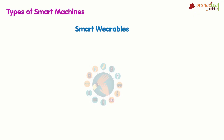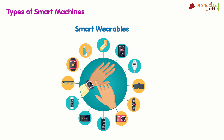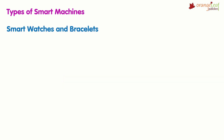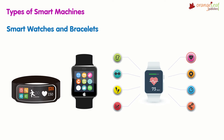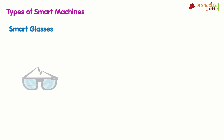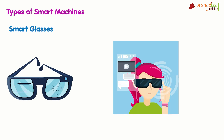Smart wearables: smart wearable devices is the general term for machines that we can wear like an accessory, such as watches, bracelets, glasses, clothing, etc. Smart watches and bracelets run on battery, are very portable, track heart rate, number of steps walked, and exercise activity, and provide access to messages. Example: Apple Watch. Smart glasses run on battery, provide easy access to information, and are worn like sunglasses. Example: Google Glasses.